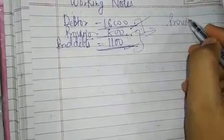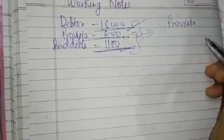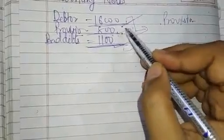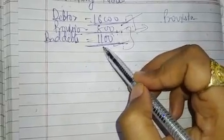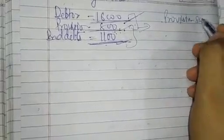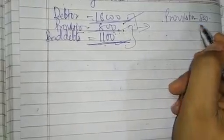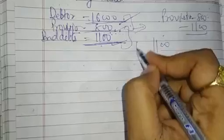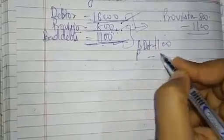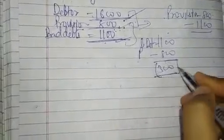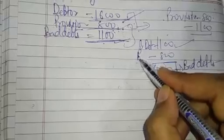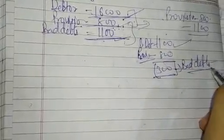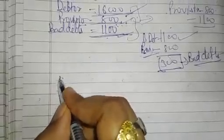Provision का मतलब है — जैसे घर में भी हम थोड़ा पैसा store कर लेते हैं ताकि future में जरूरत पड़े तो उस reserve से निकालें। उसी तरह firm में भी debtors के लिए provision create करते हैं। अब यहाँ bad debts ₹1,100 हैं, provision already ₹800 का है, तो net में सिर्फ ₹300 के bad debts हैं जो provision से cover नहीं होते। Total bad debts ₹1,100 हैं, लेकिन provision की वजह से actual loss ₹300 का है।